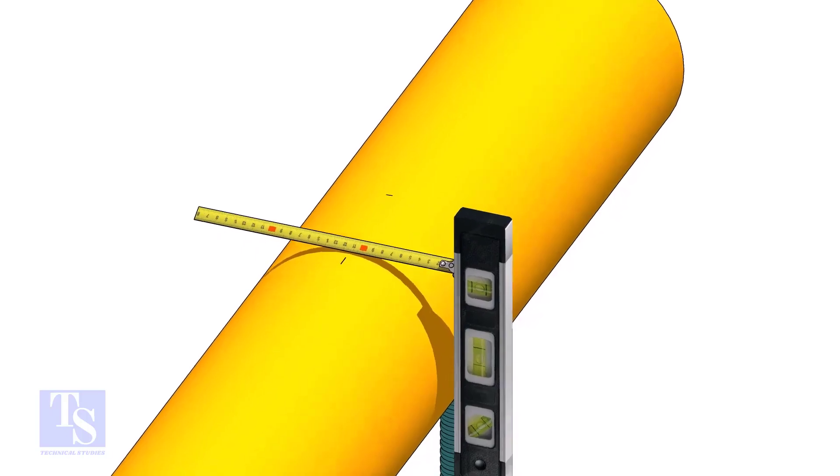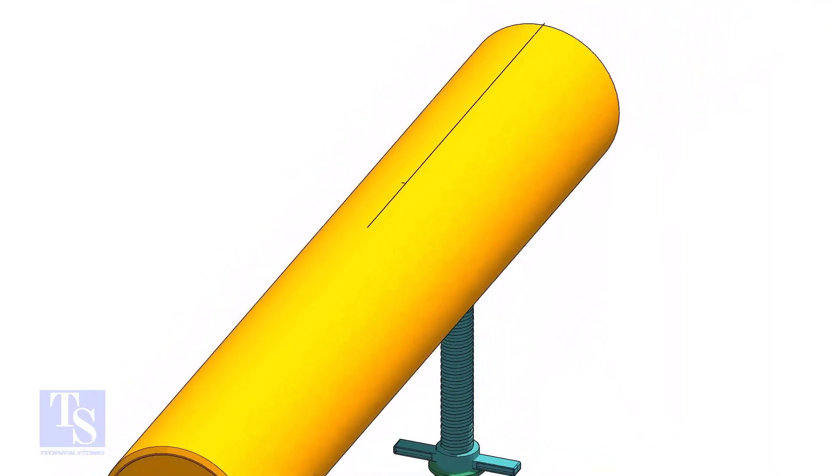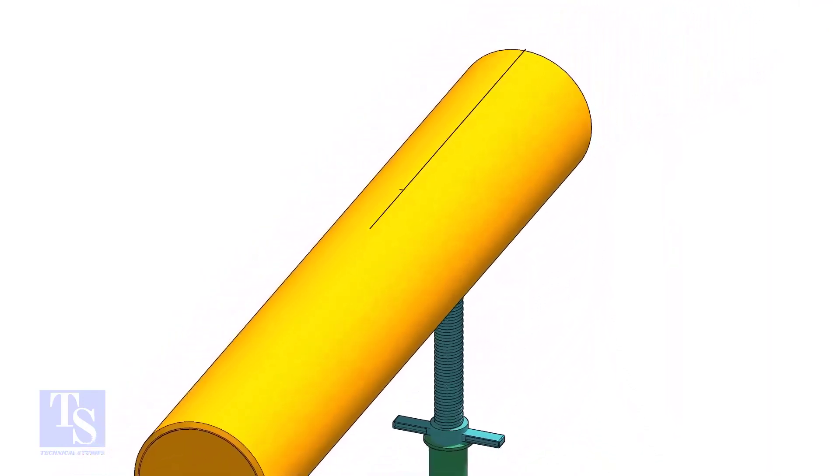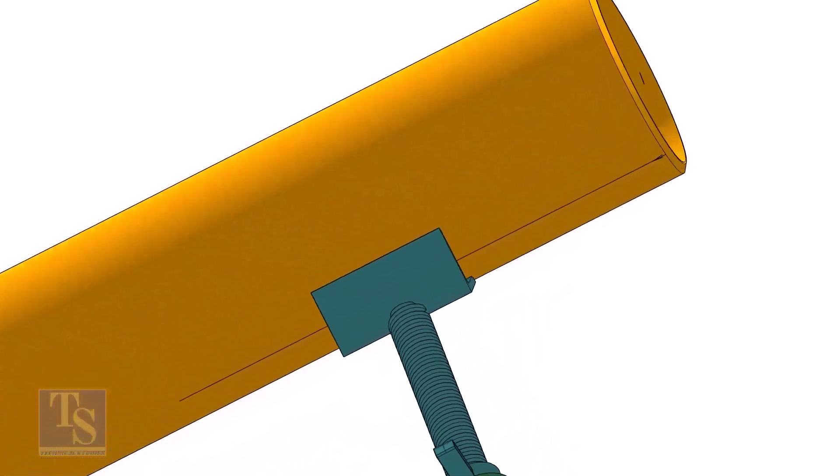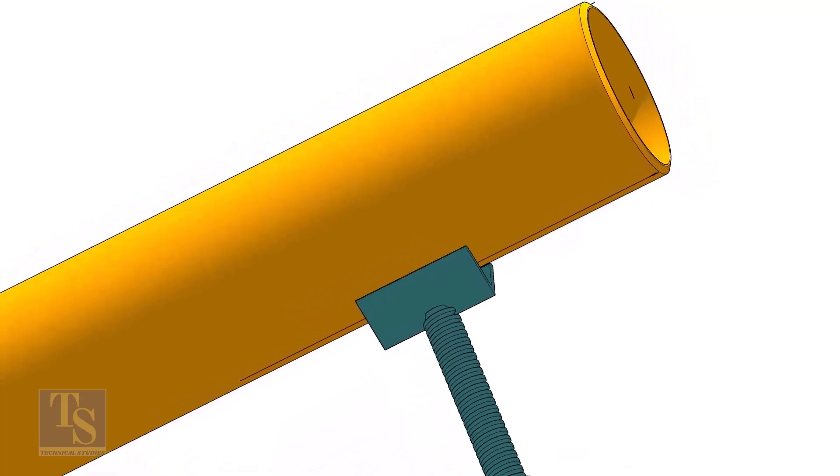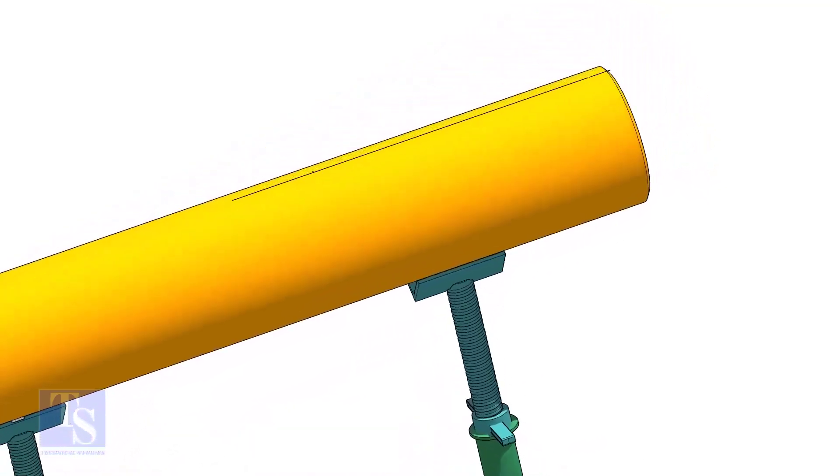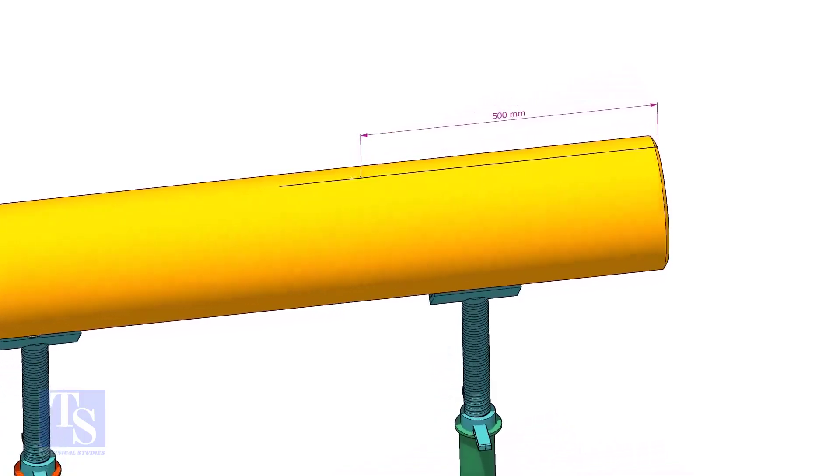Mark the center of the other end where you want the center line to be extended. Mark the center of the branch connection.